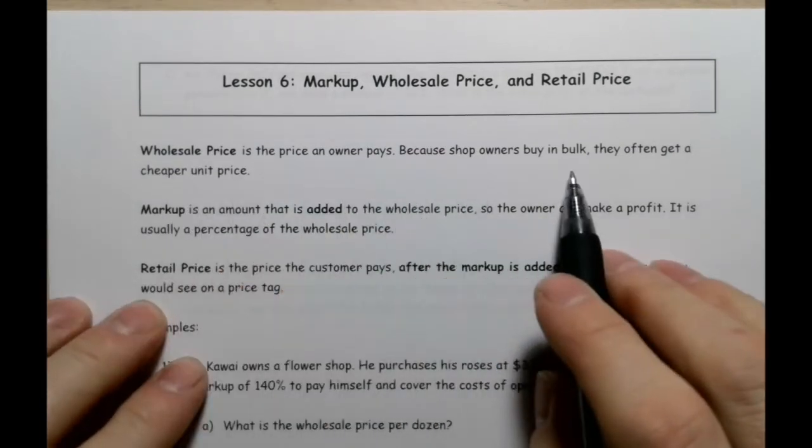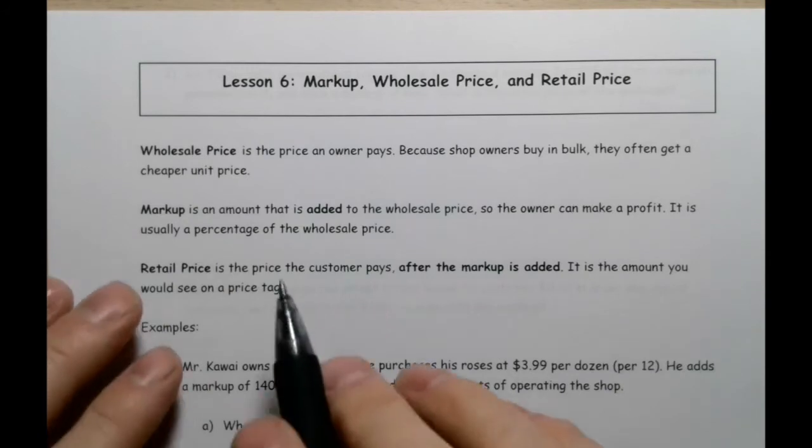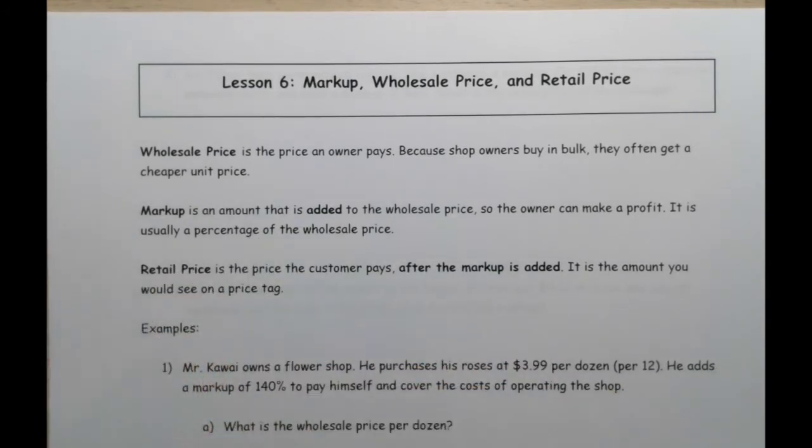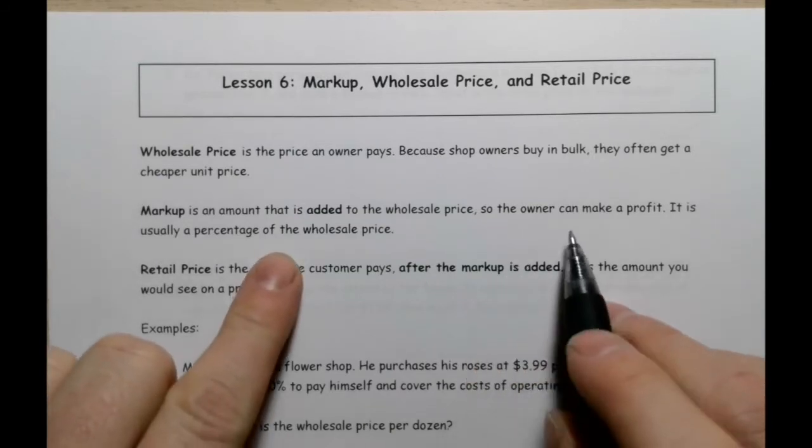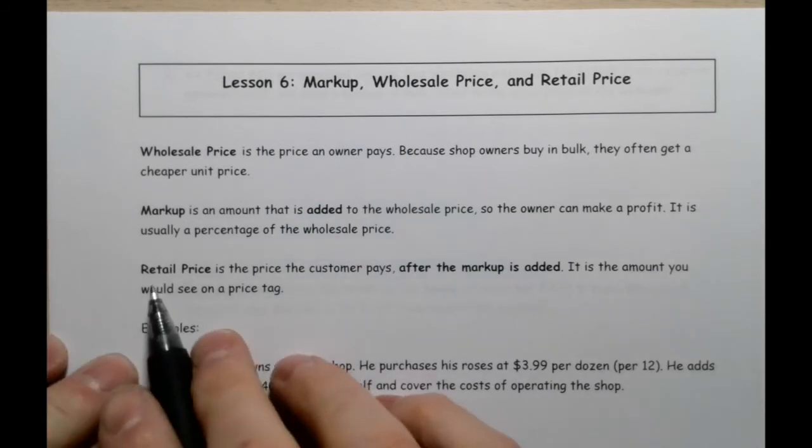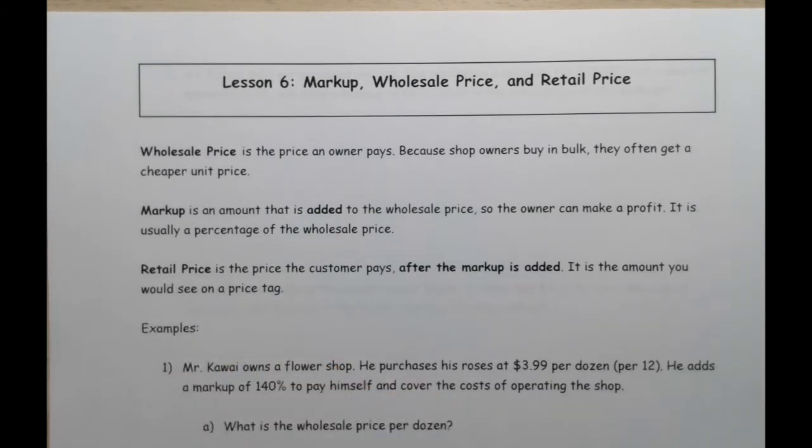Then what they'll do is they'll markup the price. So whatever they paid for it, they are going to add a certain price so that they can make a profit and cover the cost that it requires them to get it to you. And then that becomes the retail price. What you end up paying, what's on that price tag, that's the retail price after the markup is added.